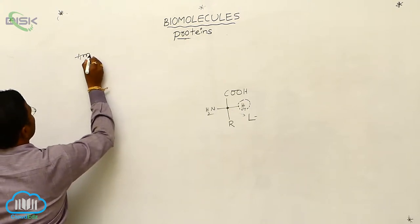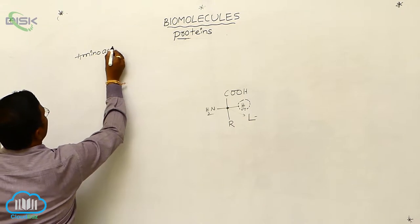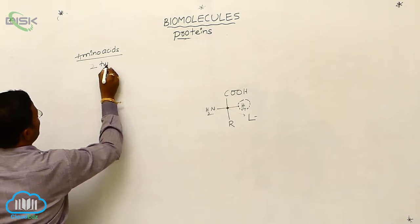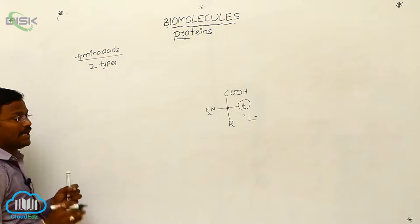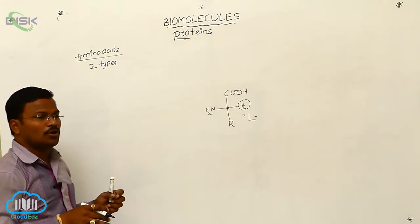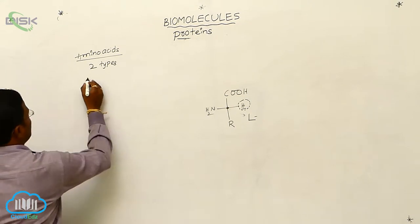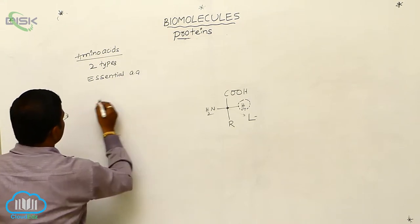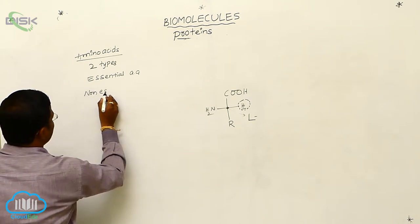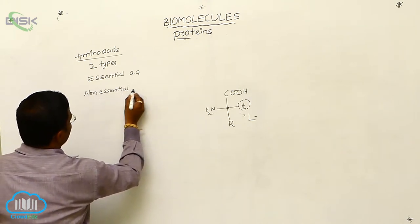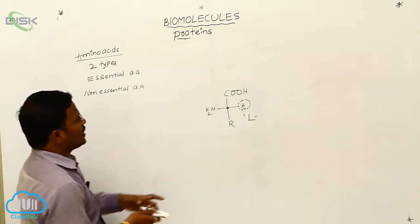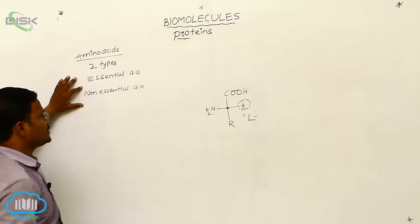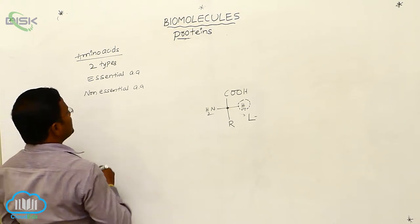These amino acids are classified into two types based on their availability in the living organism body, especially in human beings. They are essential amino acids and non-essential amino acids. These are the two types out of all the 20 amino acids written on the board. Some of them are called essential amino acids and some are called non-essential amino acids.